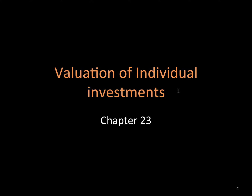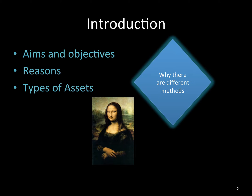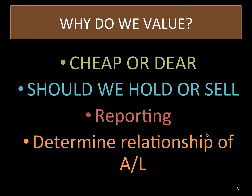So what's happening here? The introduction. In this video, I'm going to look at the aims and objectives of valuing assets, the various reasons, and the types of assets we value. I'm going to ask the question: why are there different methods of valuation? I've got a picture of the Mona Lisa — the whole idea of how do you value something that is priceless? The mere fact that it's priceless suggests it doesn't have a value, or that its value is extremely high. Why do we value assets? There are four main reasons.